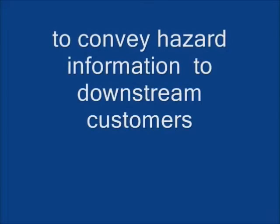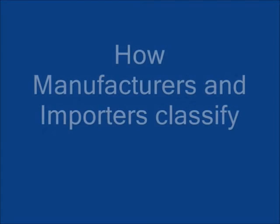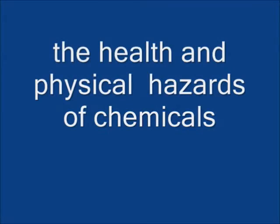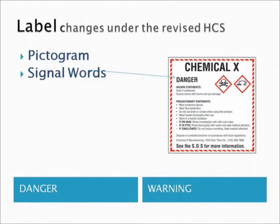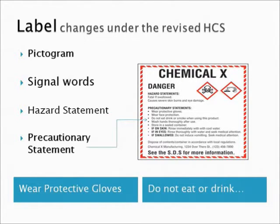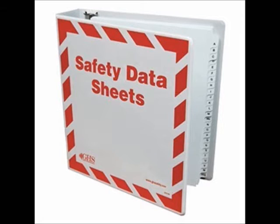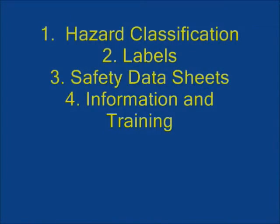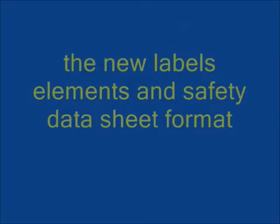Since the basis of HazCom has not changed, then what are the changes to the HazCom Standard? There are four areas we need to be concerned with. First is Hazard Classification. OSHA has provided specific criteria for how manufacturers and importers classify health and physical hazards of chemicals. The second major change is in how chemicals are labeled. Labels must include a harmonized signal word, pictogram, and a hazard statement for each hazard class and category. Precautionary statements must also be provided. The third area for change is Safety Data Sheets, which will now have a specified 16-section format. The fourth area is Information and Training. Employers are required to train workers by December 1, 2013 on the new label elements and Safety Data Sheets format to facilitate recognition and understanding.